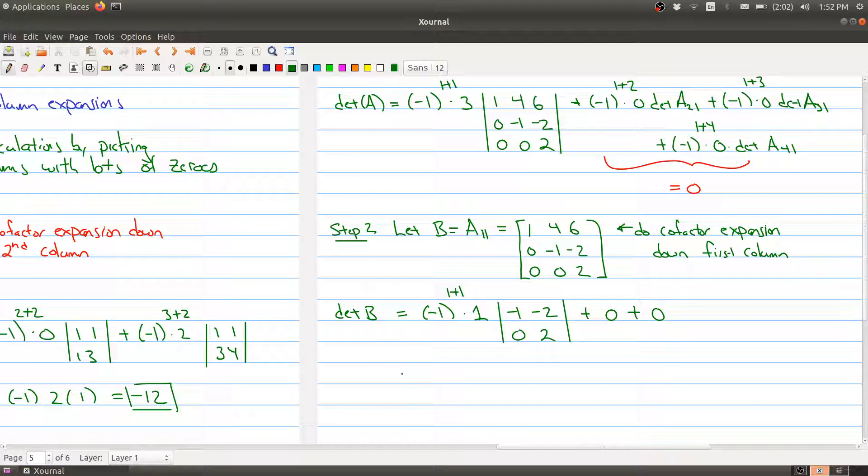Now we're heading into the home stretch here because this is a 2x2 matrix and we know how to compute the determinant of that. So we have (-1)^2 times 1, and in here we get -2. So we end up with -2 in this particular spot.